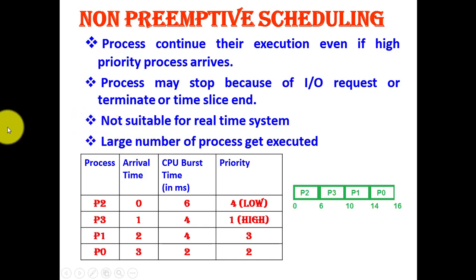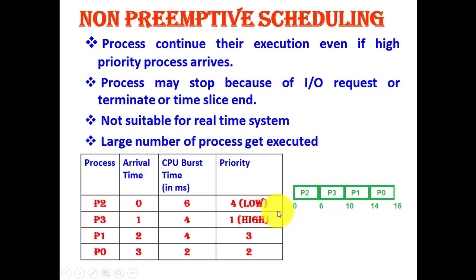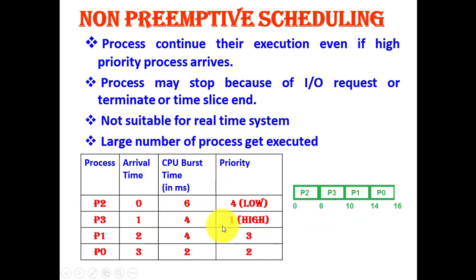Using the same example to illustrate: P2 arrives first and has lower priority. In non-preemptive scheduling, no matter if a higher-priority process arrives, P2 continues until its completion. Then P3, which arrived second, is given a chance next — even though other processes have already entered the system. It does not matter what the priority is; the processes are executed according to their arrival time. This type of scheduling with no interruption is called non-preemptive scheduling.